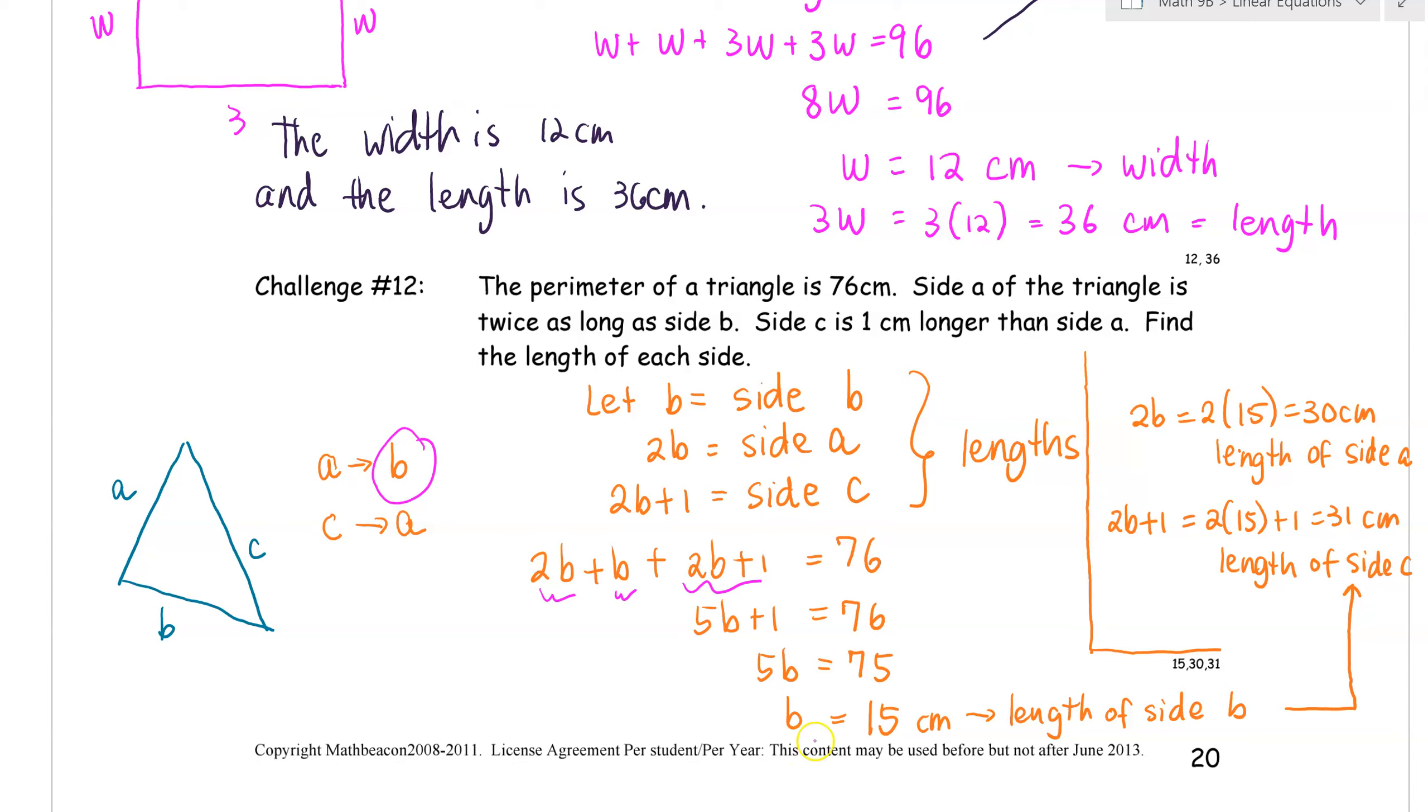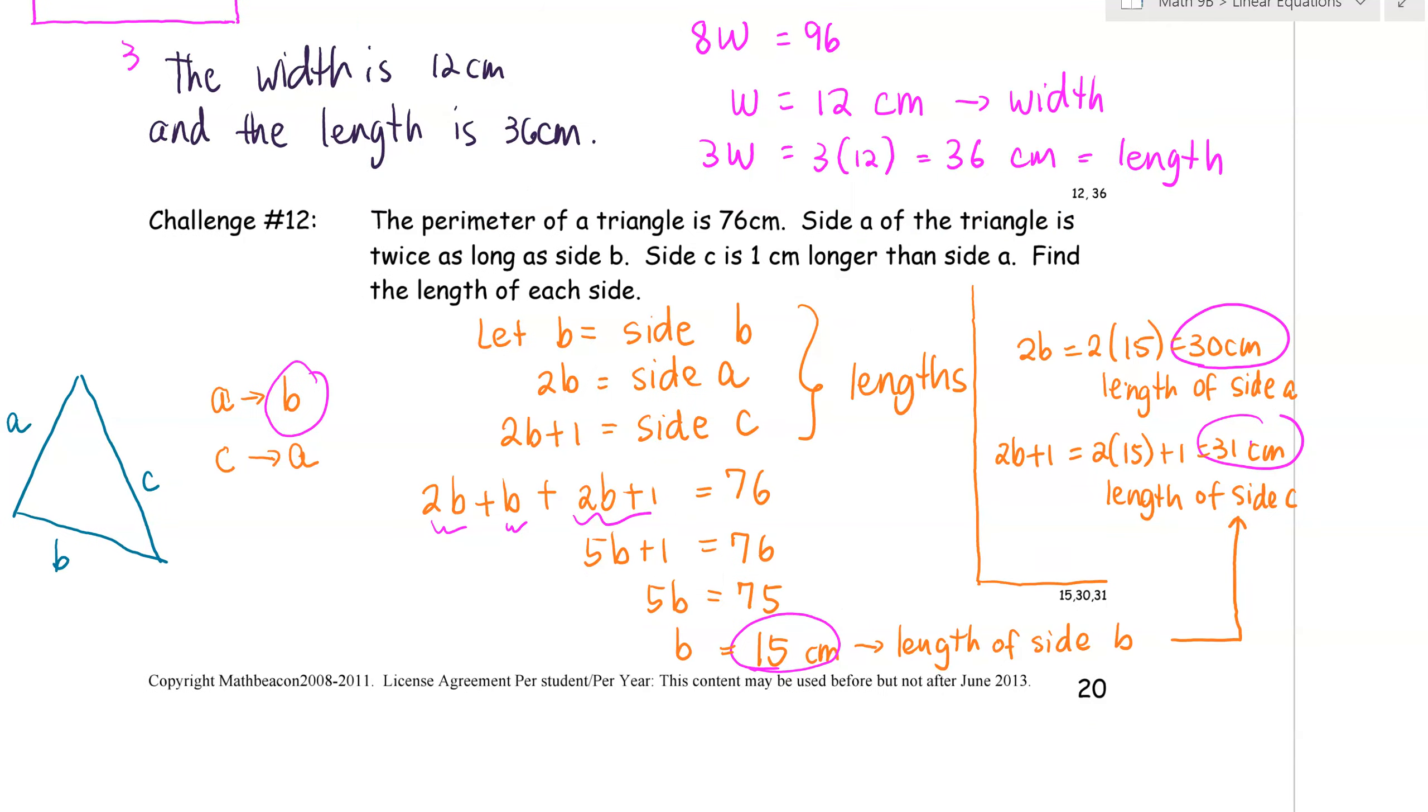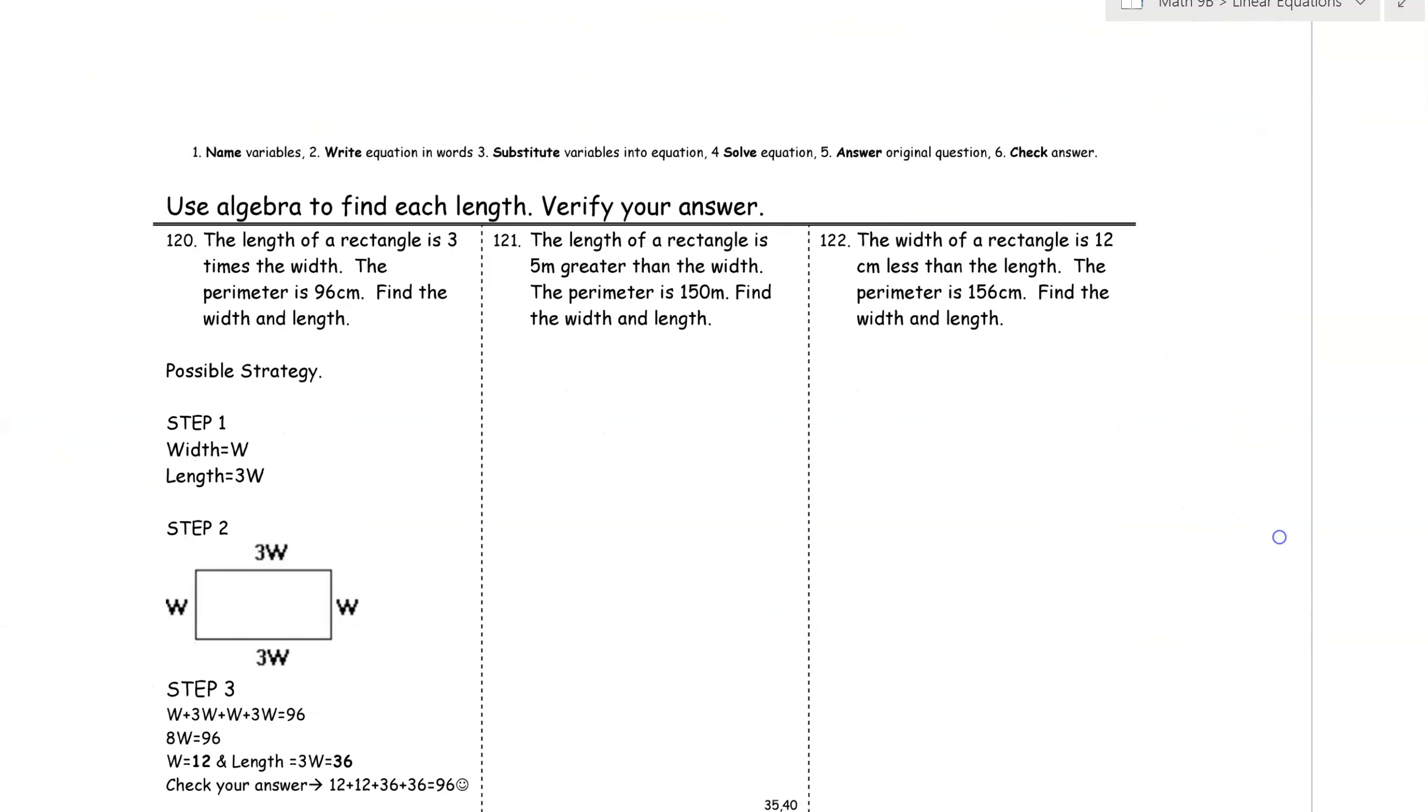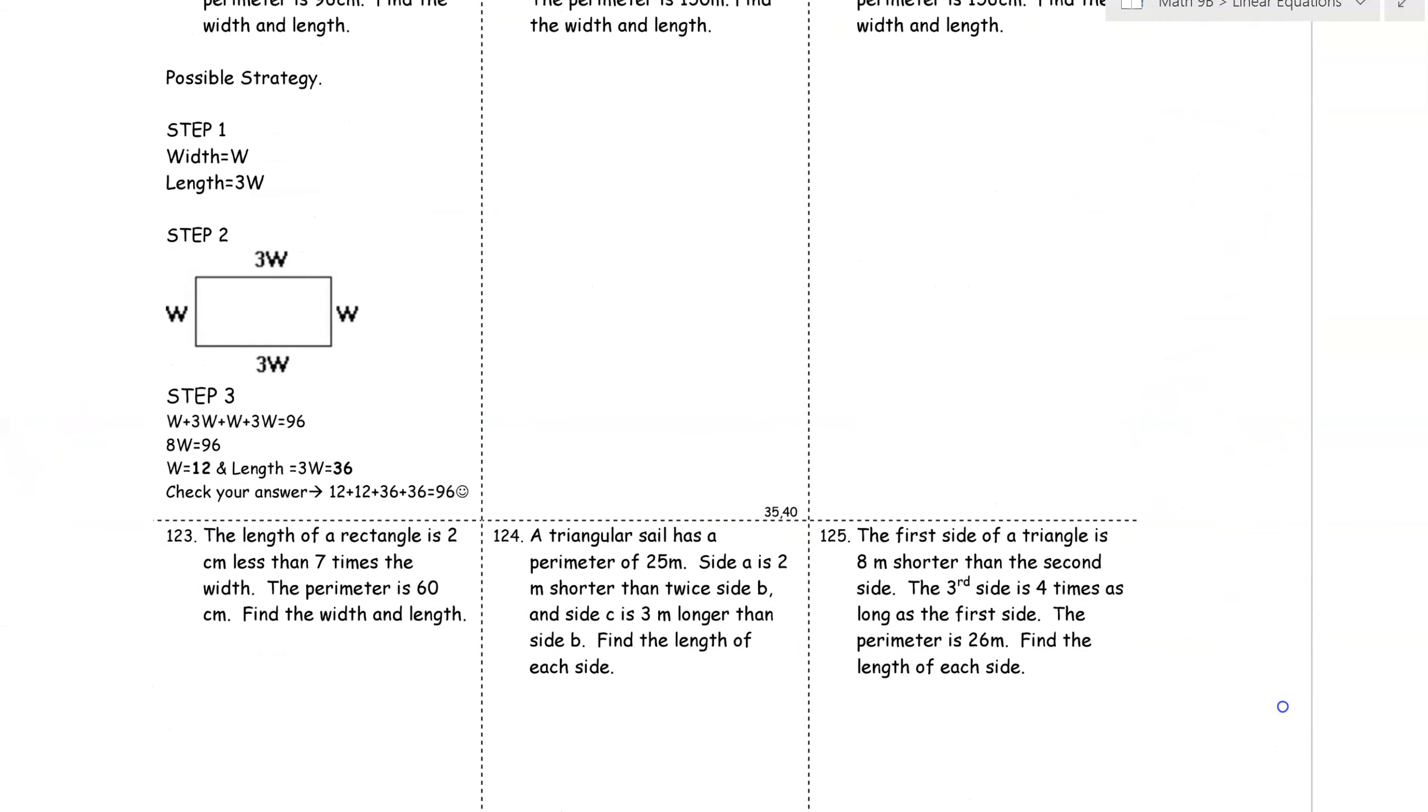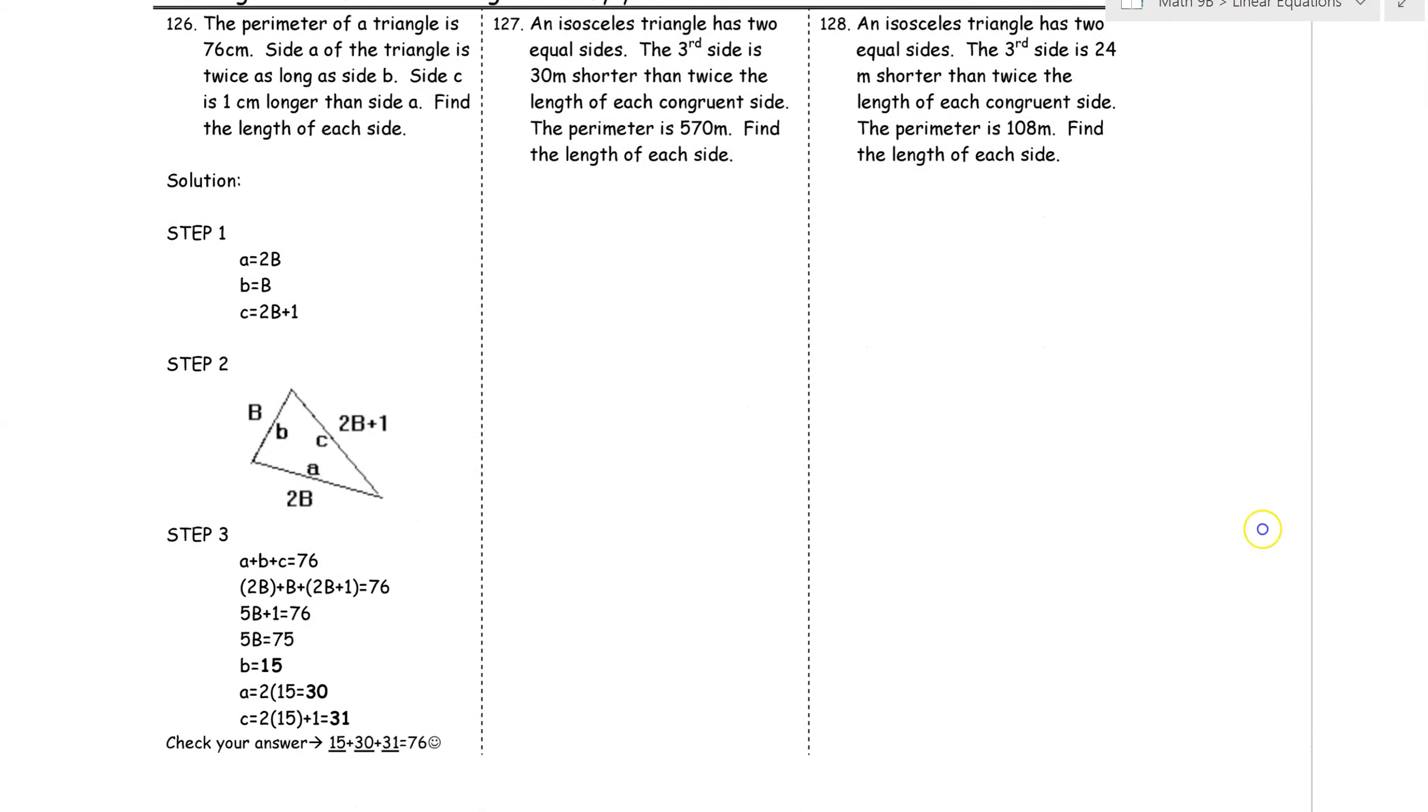So your lengths there are 15, 30, and 31. And you can make a generalized statement there that the lengths of all the sides of the triangle are 15 centimeters, 30 centimeters, and 31 centimeters. So great job for you guys. I think you're ready to do all the odd problems of this page here and also this page here.